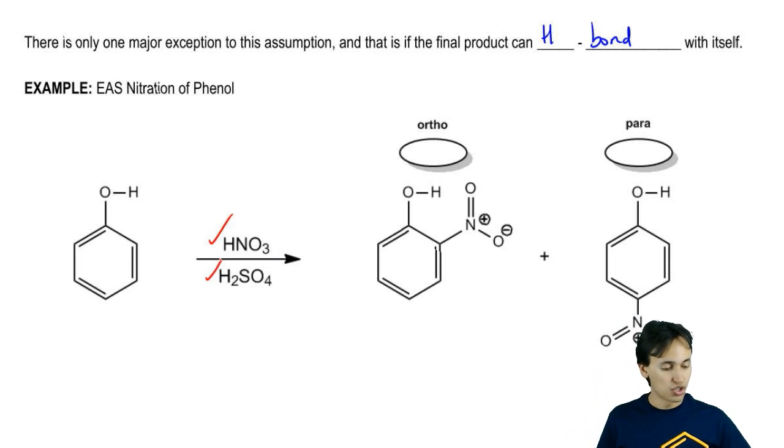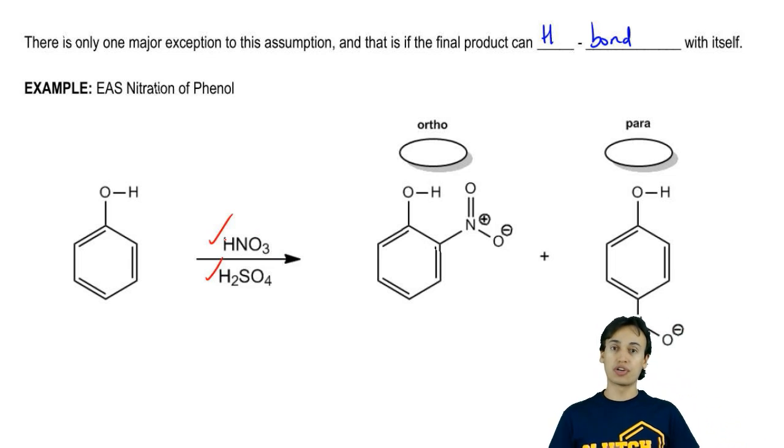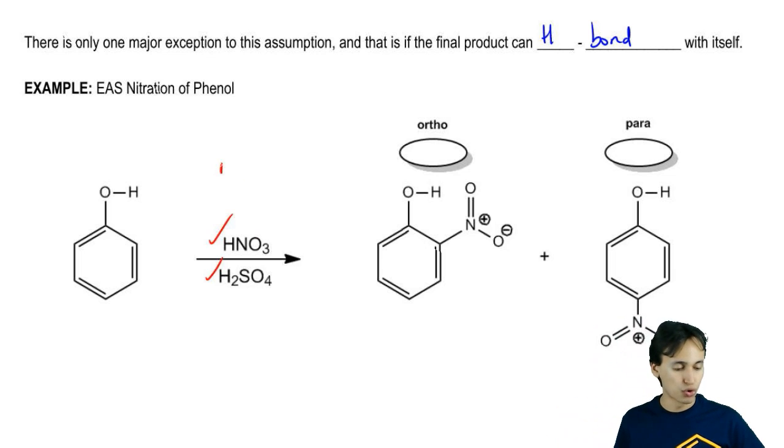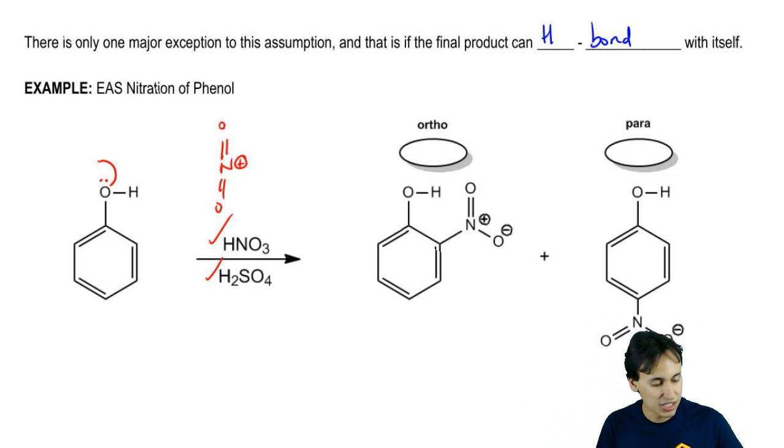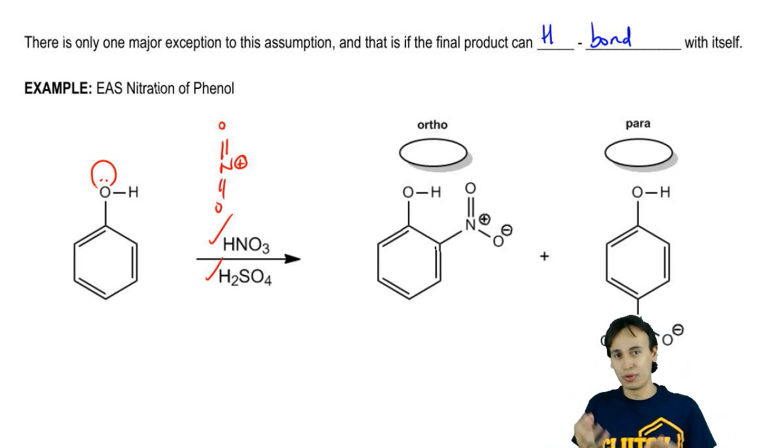Notice that here I have my nitric acid. I have my sulfuric acid. We know that we're going to generate the nitronium cation or nitronium ion. We know that OH is an ortho-para director because it has a lone pair. That means that it's an electron donating.